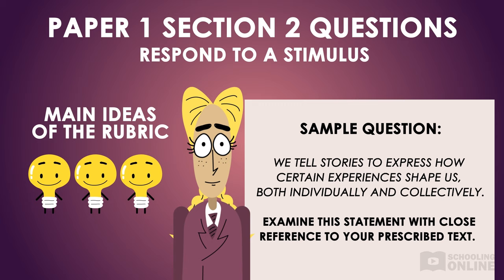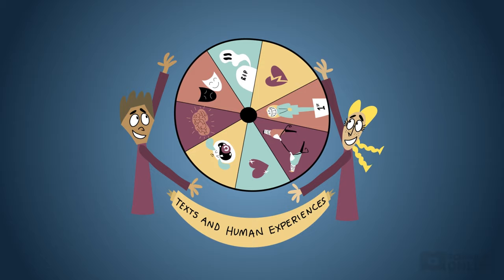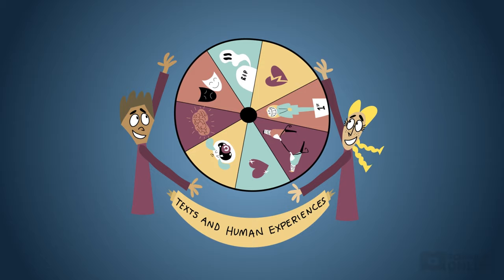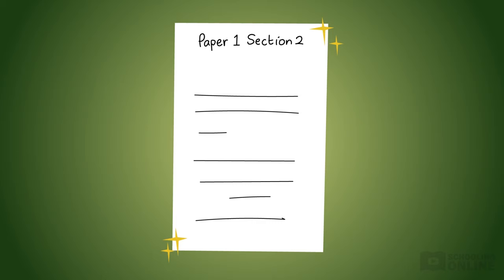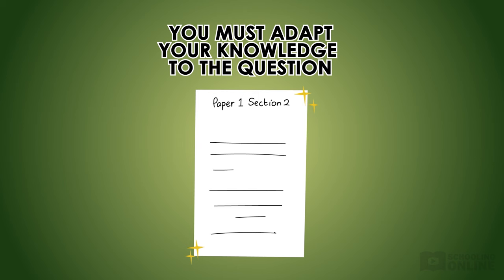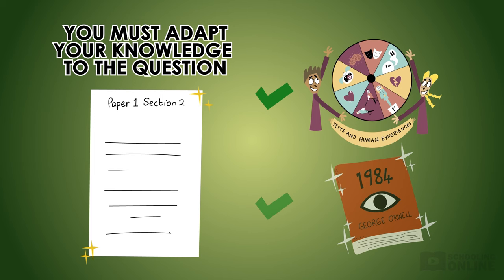If you need a refresher on the Texts and Human Experiences rubric, flick back to our series of lessons that focus on breaking down and understanding the key aspects of the rubric. To be successful in Paper 1, Section 2, you need to be able to adapt your knowledge of the novel to answer whatever question they throw at you. This means you need to know the rubric and your text thoroughly — not an easy job, but we're here to help.